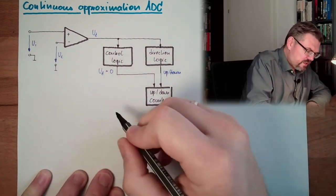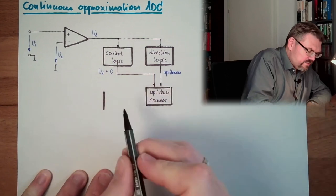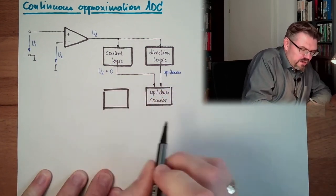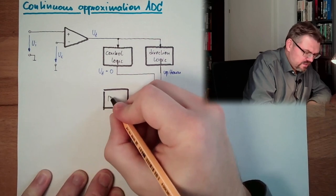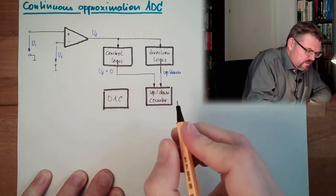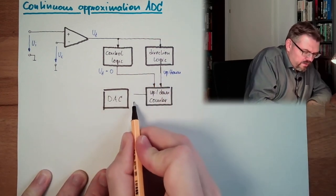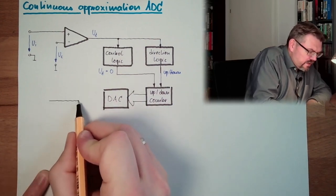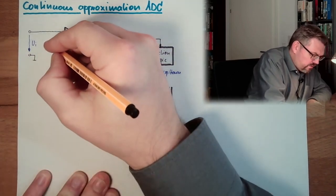Because actually what the counter value is producing, here we have a digital-analog converter, DAC, where the counter value is fed to and the output of the DAC is actually the compensating voltage.